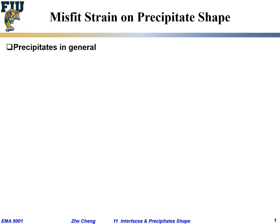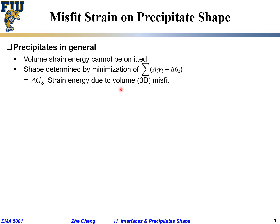Let's go a little bit further on misfit on precipitate shape. So far we have omitted the three-dimensional or volume strain energy, but in reality, quite often you would find the hole left by the precipitate versus the precipitate itself volume — they may not fit each other. The precipitate quite often is a little bit larger than the hole. In those cases you cannot omit the three-dimensional strain energy. The total energy for the system would be the interfacial area term plus the 3D volume strain energy term, delta G_s — s for strain energy — due to the volume three-dimensional effect.